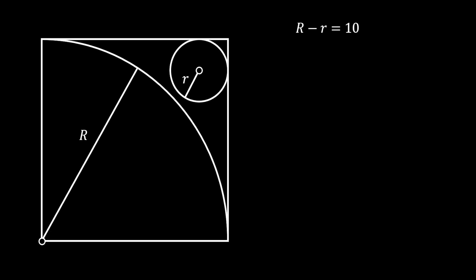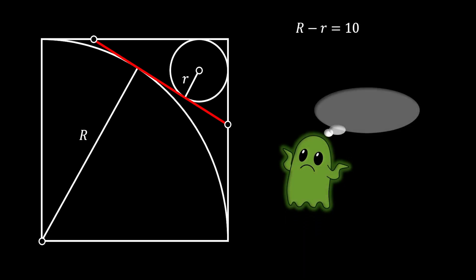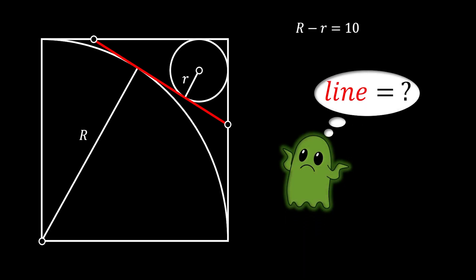Now let's pull the tangent line for both our quarter circle and our inscribed circle. The question is: is it somehow possible for us to find the length of this red tangent line? If you want to try this interesting problem for yourself, you can pause the video right now and then come back and check the solution.